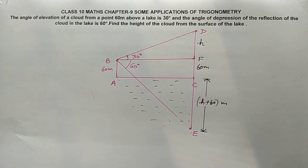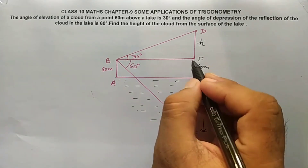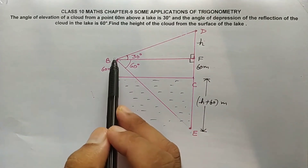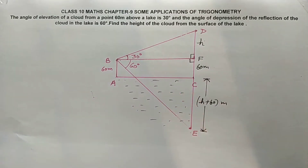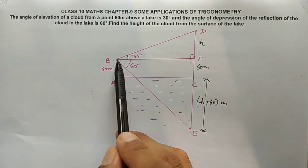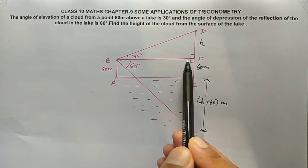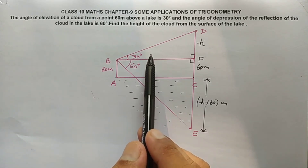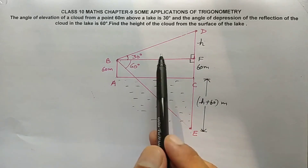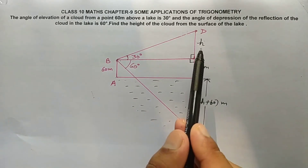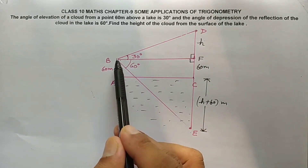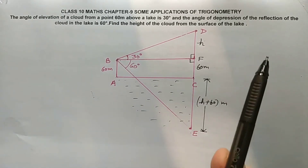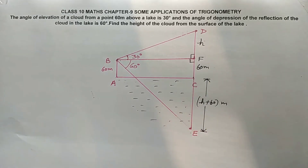Our work is to first find h. We have two right-angle triangles: triangle BFD and triangle BFE. In both triangles, BF is common. So we will find BF in terms of h from both triangles, then equate the two expressions to get the value of h.